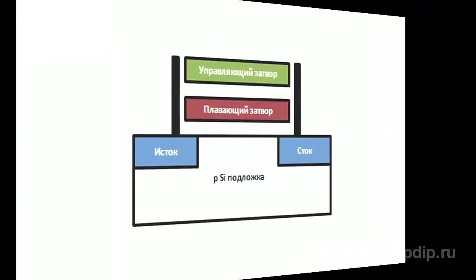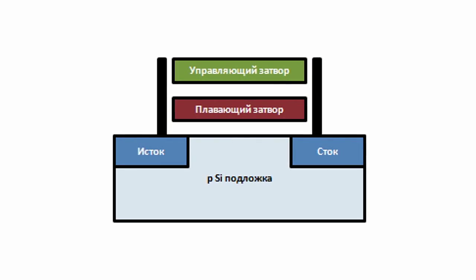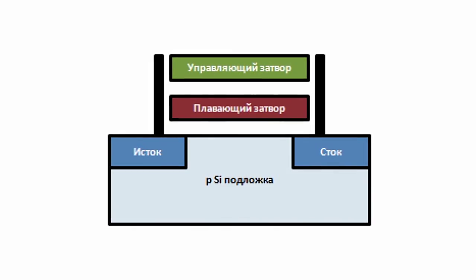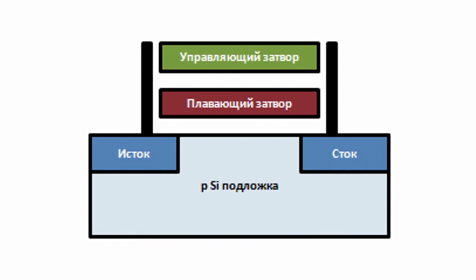Toshiba announced NAND-type flash in 1989. To understand the distinction between these two types, let's consider their principles of operation. Flash memory stores information in an array of floating-gate transistors called cells.